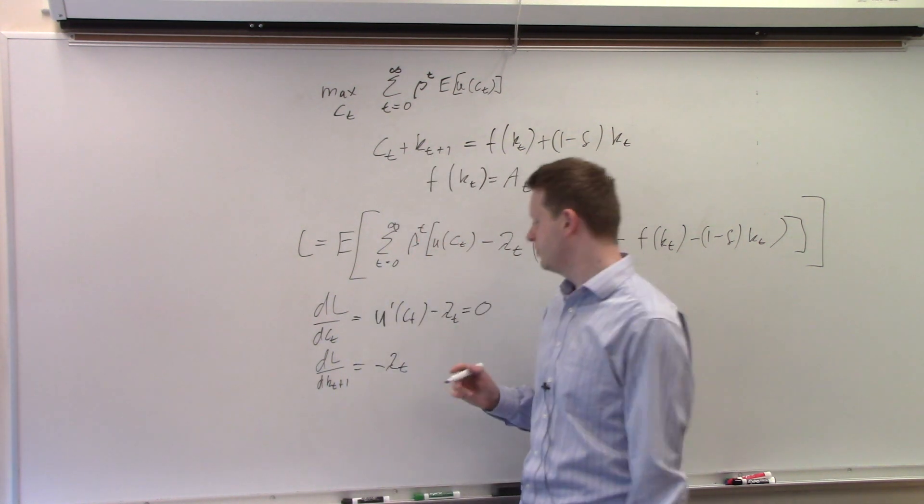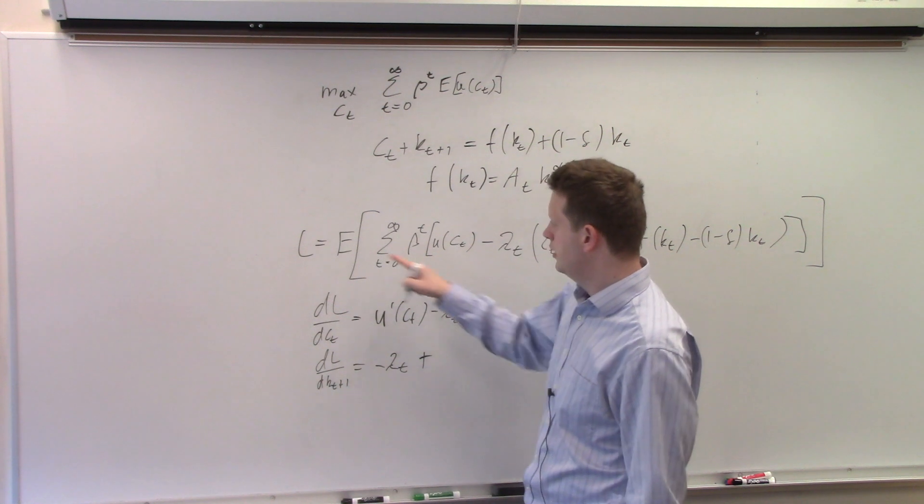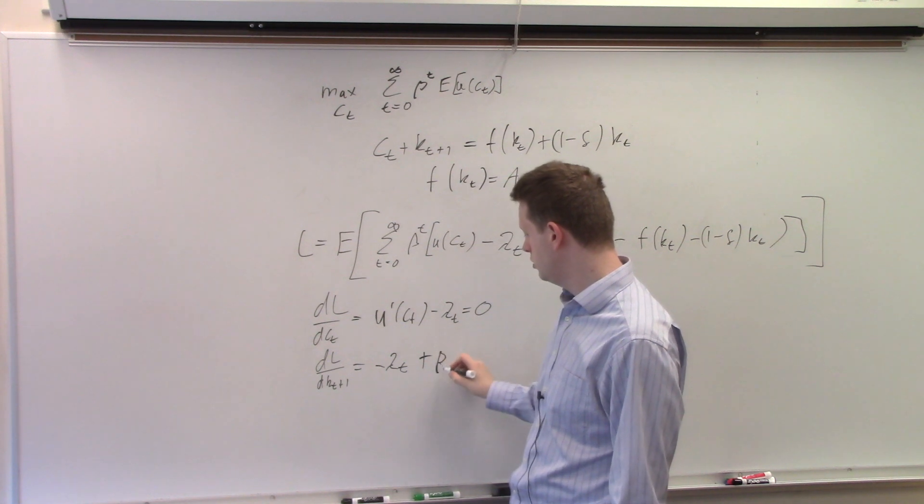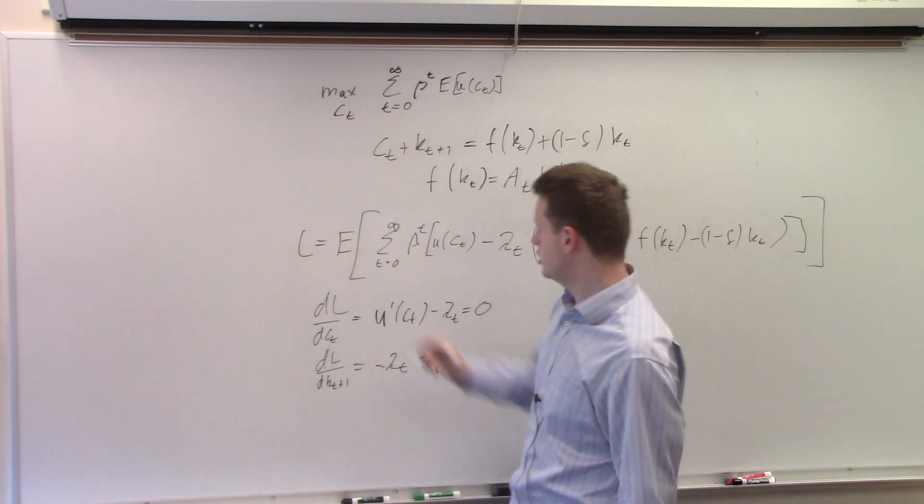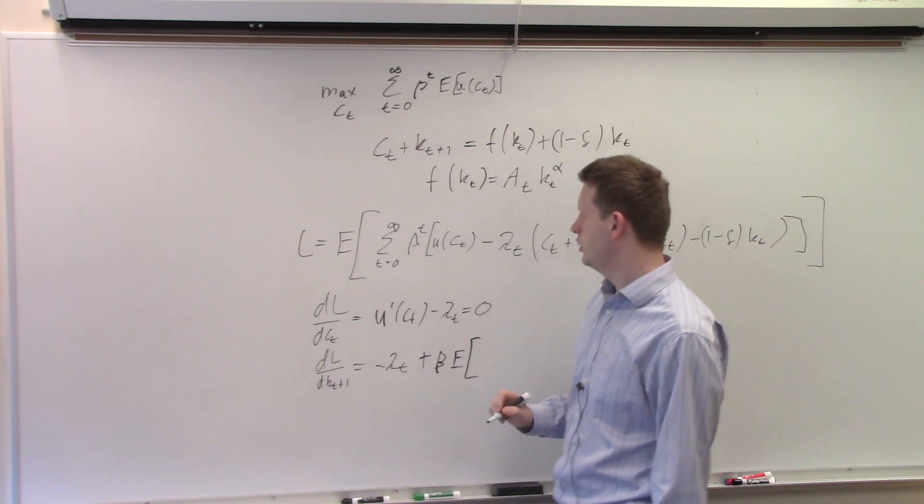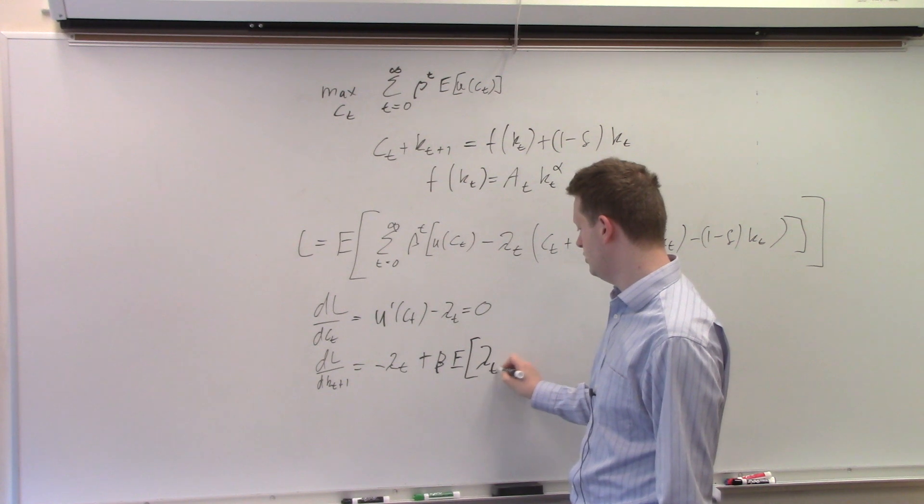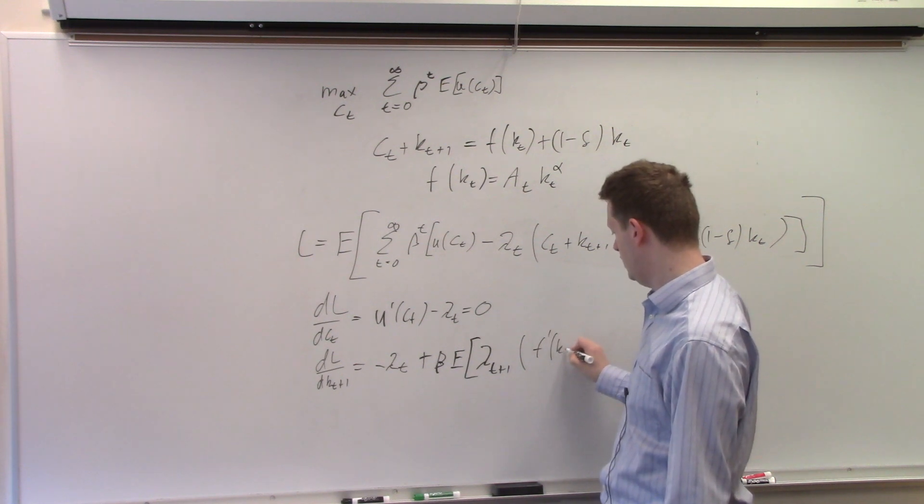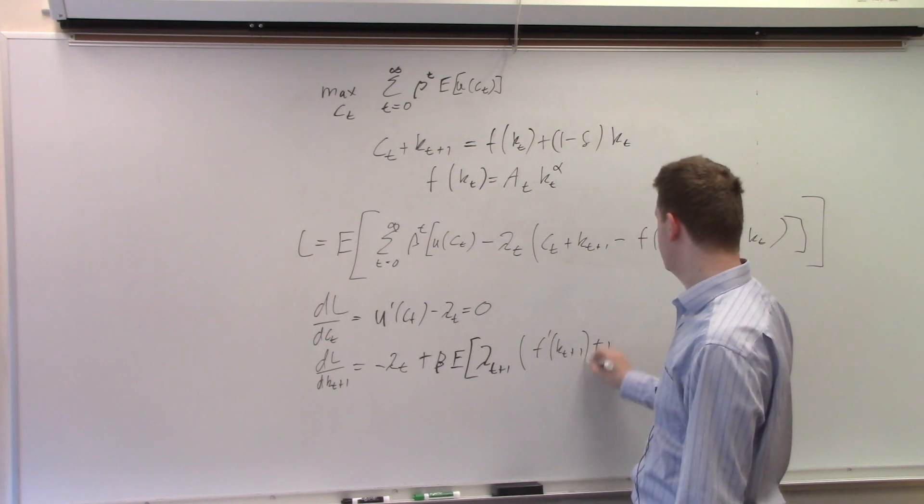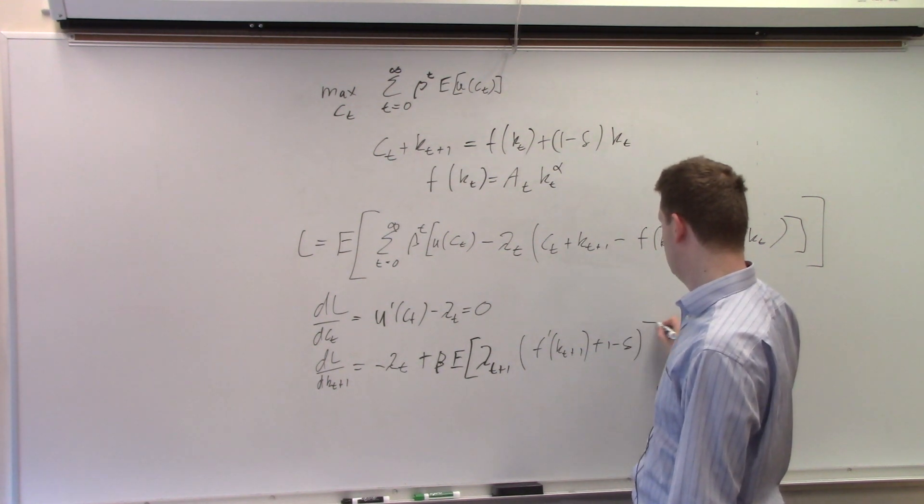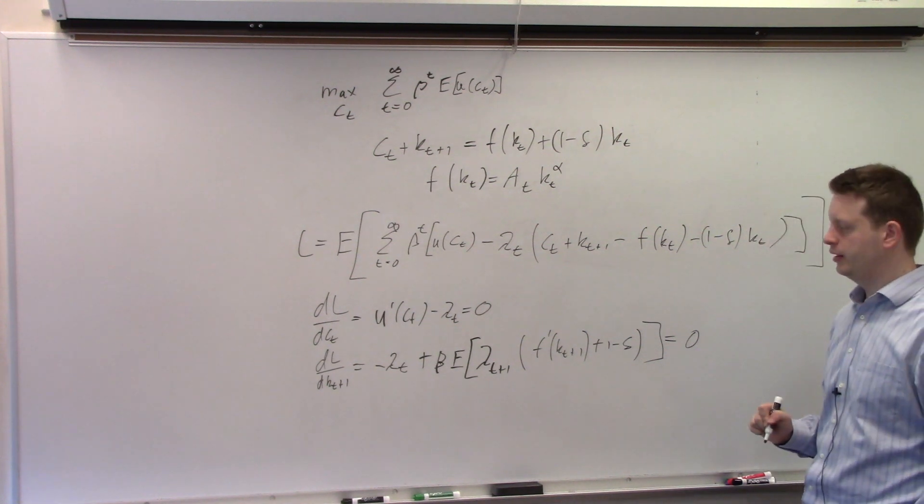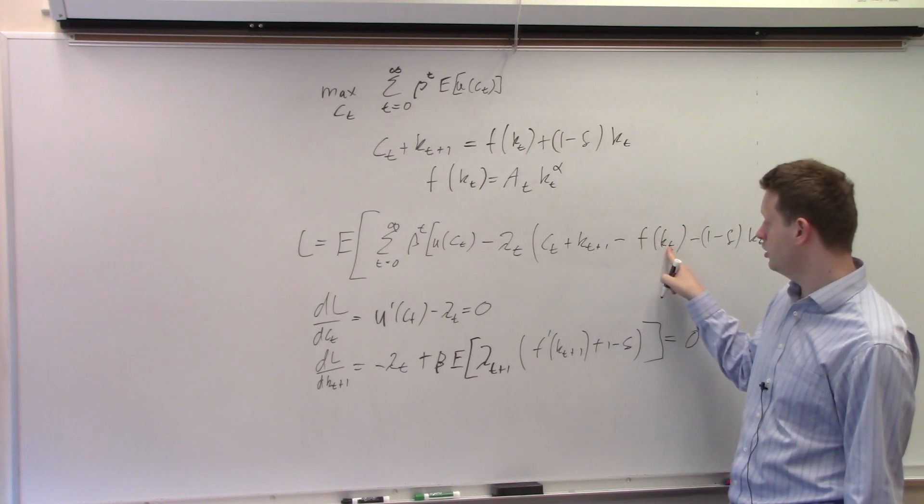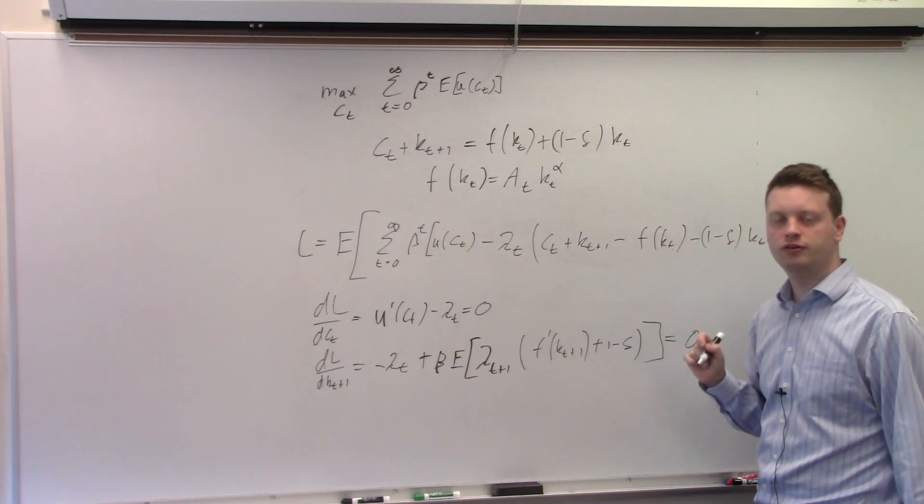So we get plus. Now we need to have a beta because we now have beta to the t+1 here. So if we divide by beta to the t, we have a beta here. And we have this expectation. And we get lambda_{t+1} times f prime of k_{t+1} plus (1 minus delta) equals zero. So we have this lambda from here. And then we have this derivative here with respect to k_{t+1}. And derivative of this expression here with respect to k_{t+1}.